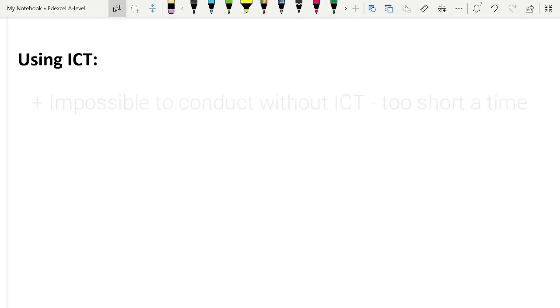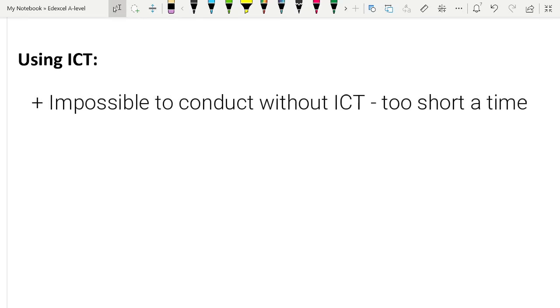You couldn't really properly measure it with a ruler, the distance that it traveled. You want to try and figure out the speed, obviously, in order to find the momentum. So this would be an impossible experiment to conduct without ICT. In that sense, it is improving the accuracy of your experiment.